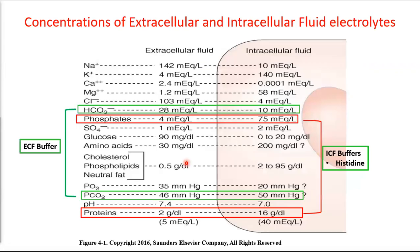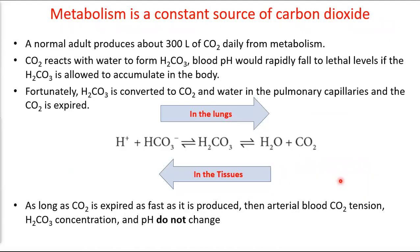The main intracellular buffering systems are phosphates and proteins — there are a lot of both inside the cell. Extracellularly, we have the CO₂/bicarbonate (carbonic acid) system as the main buffer. Among amino acids, histidine is a very important buffer because its pKa is around 7.1, making it very well-suited for physiological buffering.